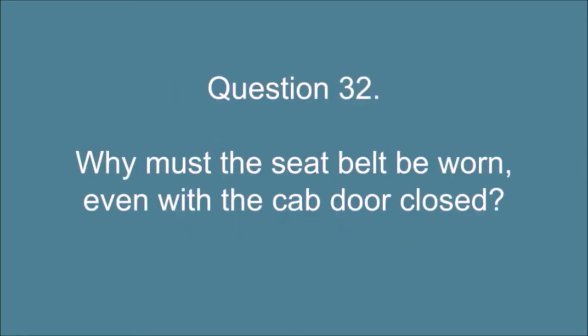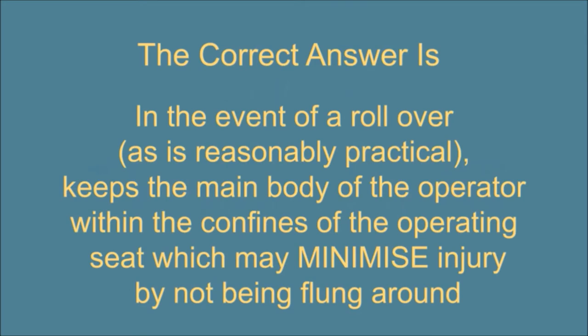Question 32. Why must the seat belt be worn, even with the cab door closed? The correct answer is: In the event of a rollover, as is reasonably practical, keeps the main body of the operator within the confines of the operating seat which may minimize injury by not being flung around.